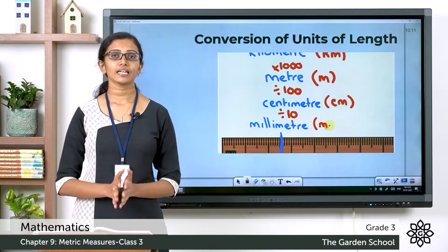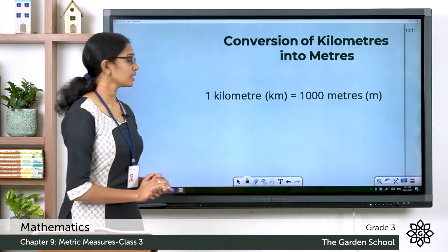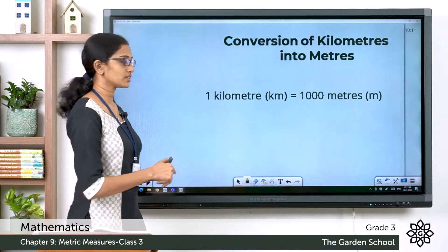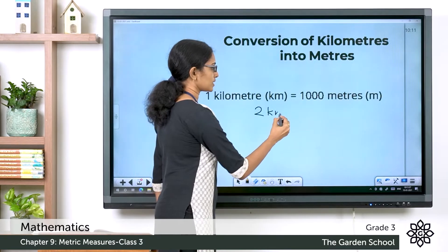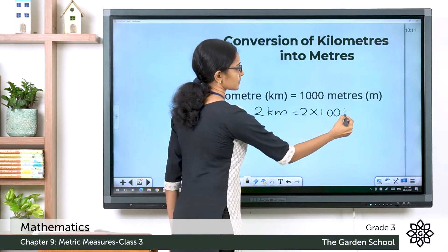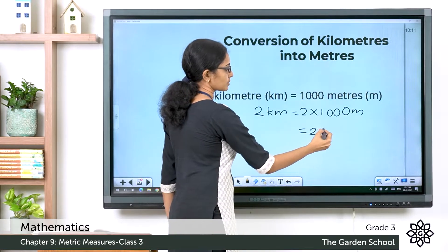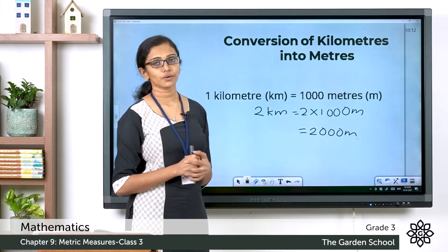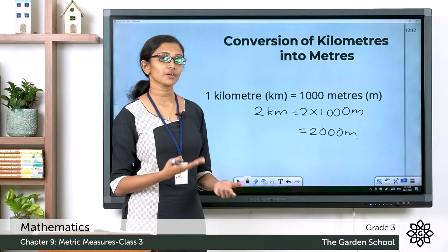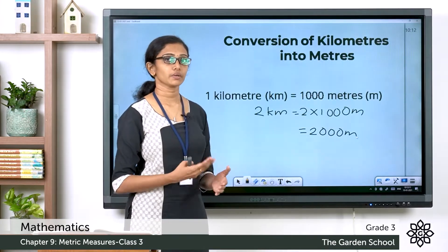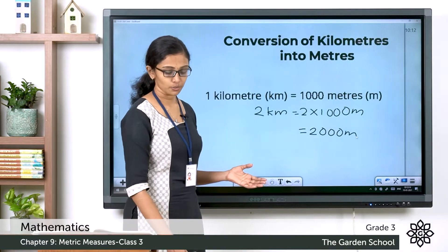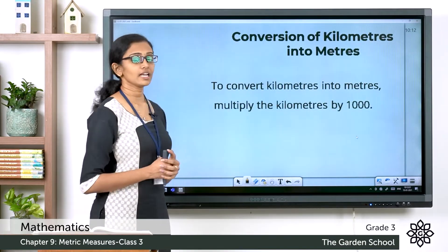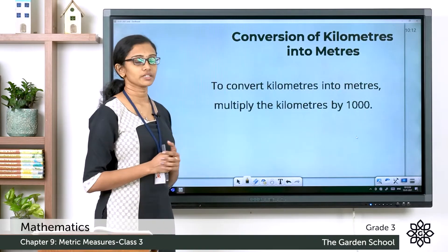We know 1 kilometer is equal to 1000 meters. So 2 kilometers will be equal to 2 × 1000 meters, which is 2000 meters. And 3 kilometers would be 3 × 1000 meters, or 3000 meters. To convert kilometers into meters, you have to multiply the kilometers by 1000.